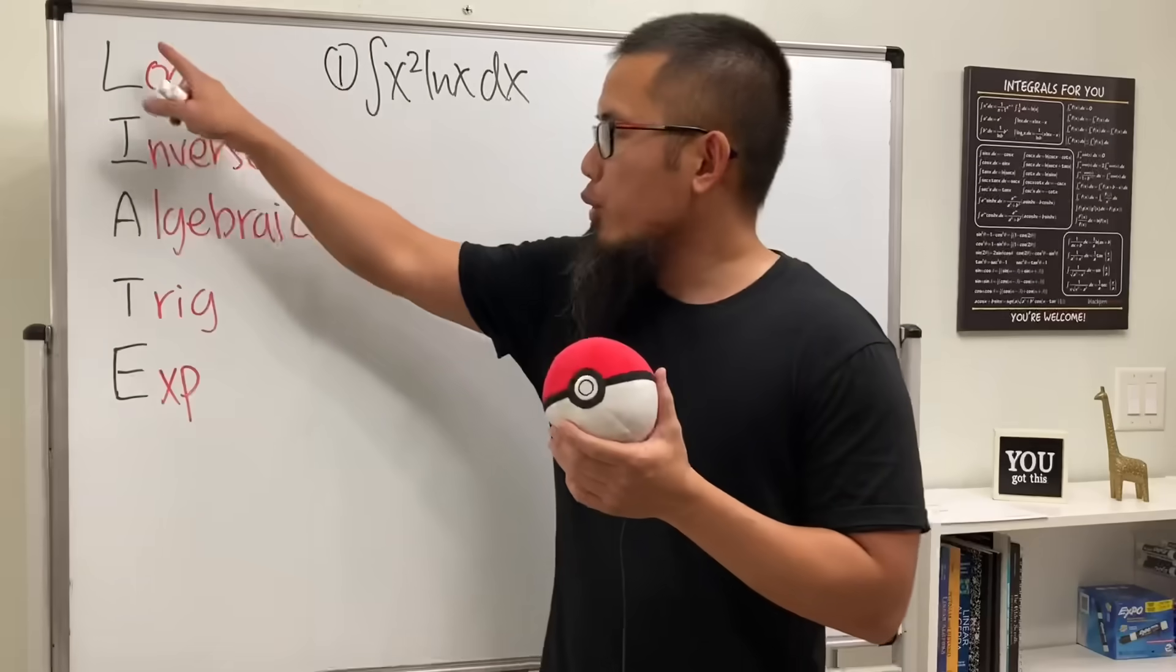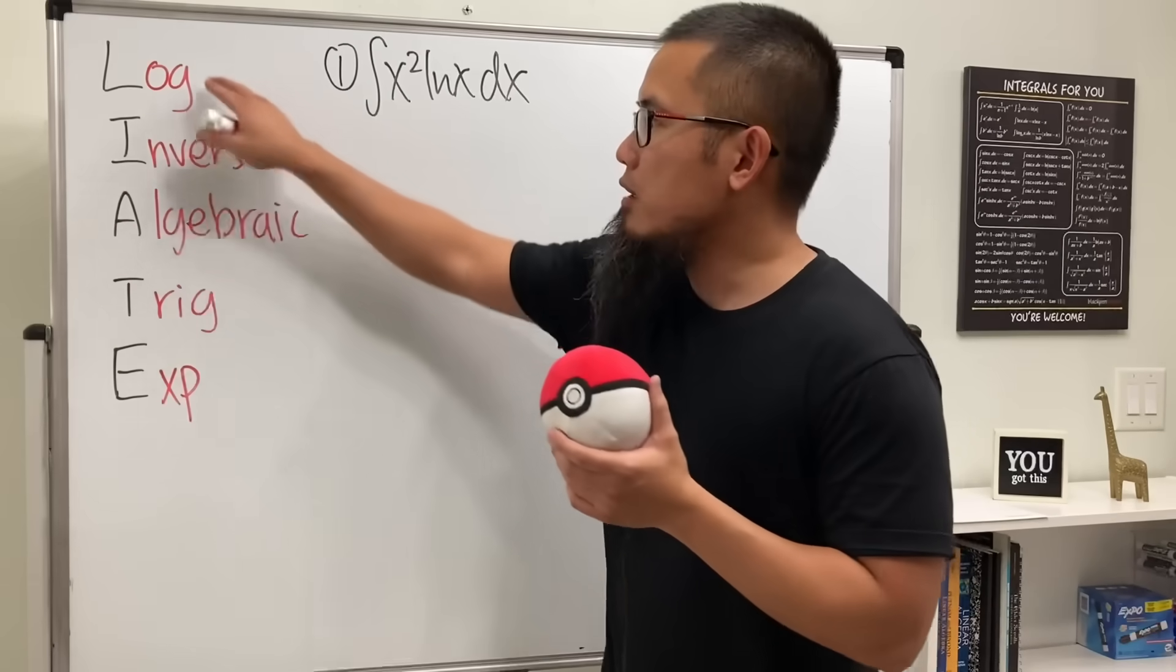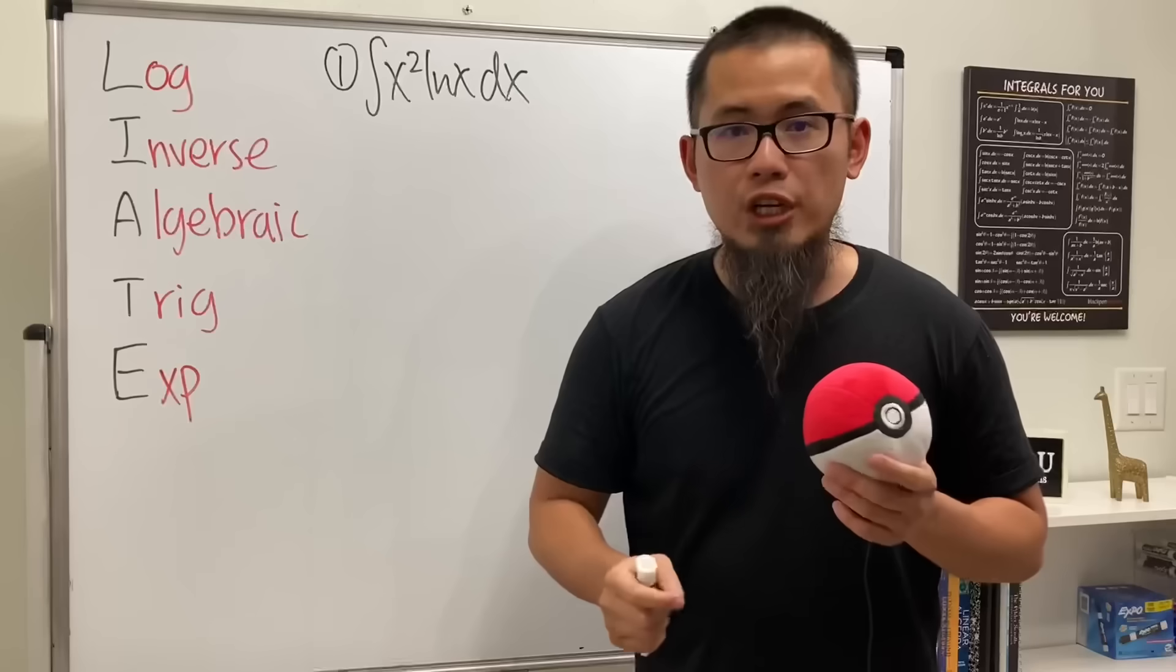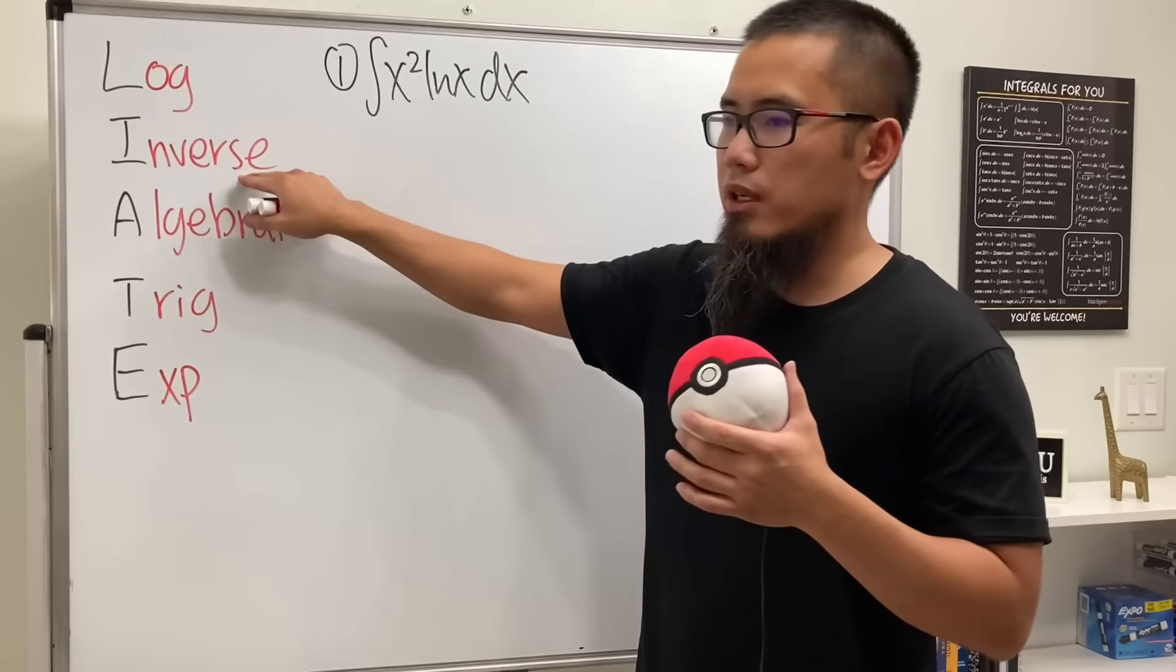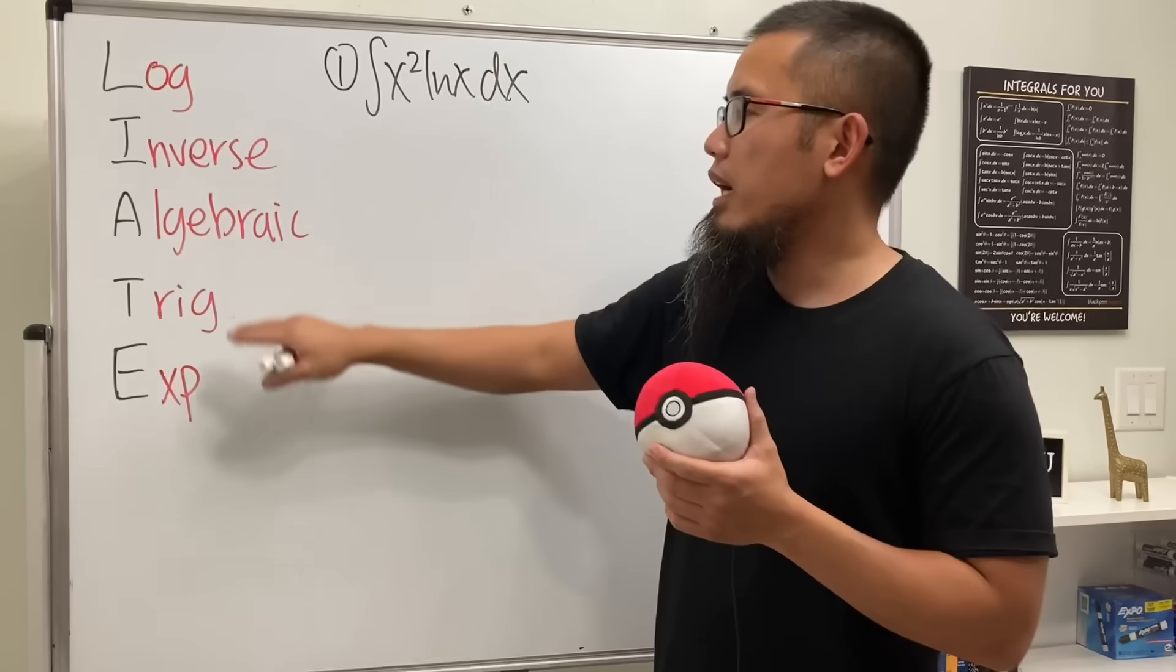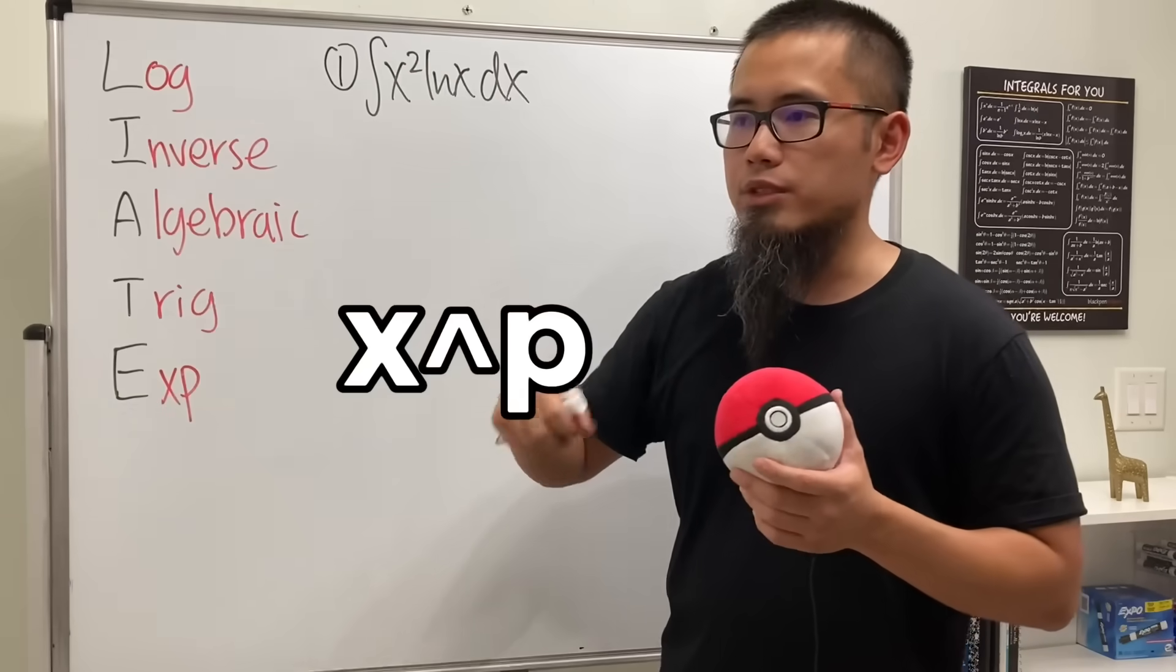So the idea is that you are going to go in this order. If you see log functions in your integral, you'll choose this to be differentiated. Next is the inverse function, such as inverse tangent, inverse cosine, etc.